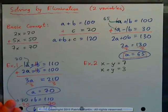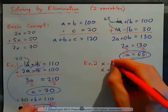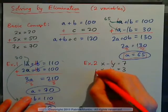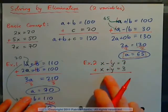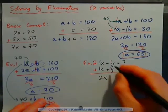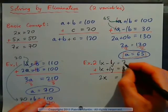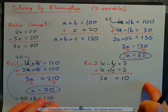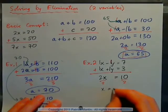Press pause on the video and see if you can solve Example 2 all by yourself. I see that I have a negative 1y and a positive 1y in these equations, so I'm going to decide to solve by elimination — by adding the equations together. Adding the left-hand sides, I get 1x plus 1x, which is 2x. Negative 1y plus 1y is 0. So I have 2x equals 7 plus 3, which is 10. Dividing by 2 gives x equals 5.